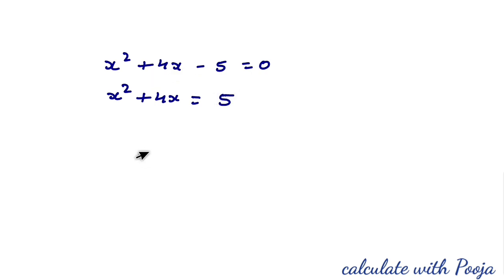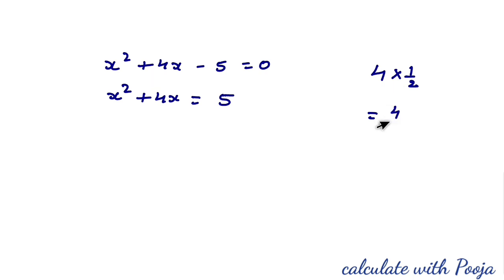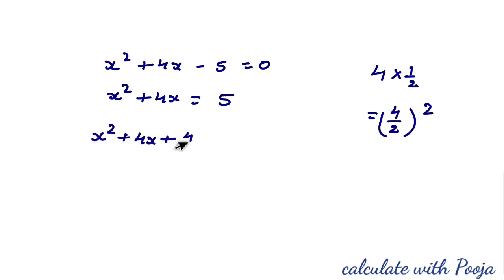So minus 5 becomes plus 5 on the RHS. Now take half of the x-coefficient: (4/2)² = 4. Add (4/2)² to both sides. So x² + 4x + (4/2)² = 5 + (4/2)².